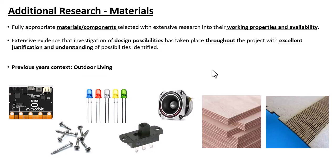For this section we're looking at additional research, focusing on materials and components that you're going to use in your models or final product. This fulfills two criteria: the main one is a section which says 'fully appropriate materials and components selected with extensive research into their working properties and availability.' It also covers an area in section one which is 'extensive evidence that investigation of design possibilities has taken place throughout the project with excellent justification and understanding of possibilities identified.'